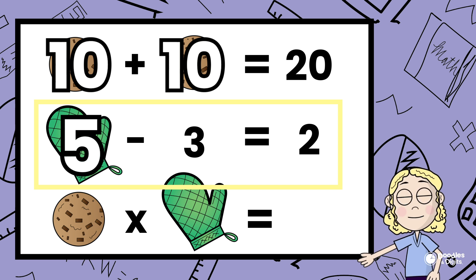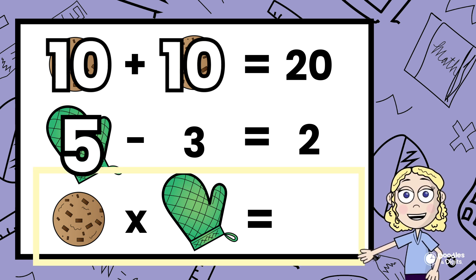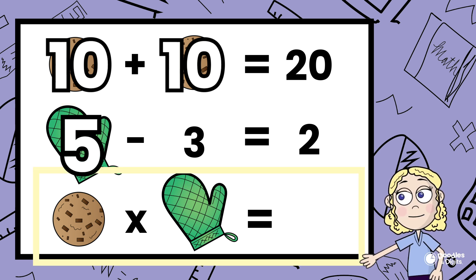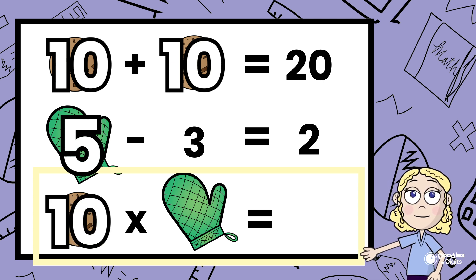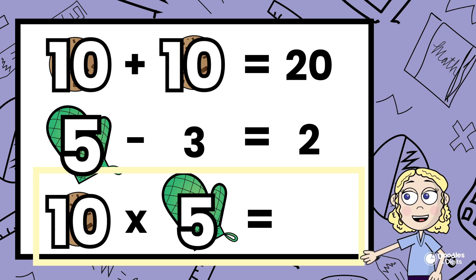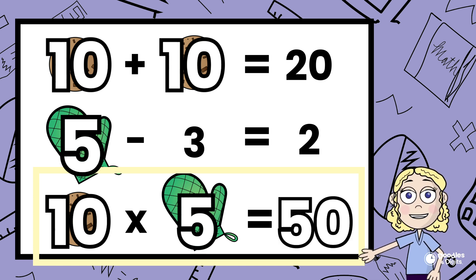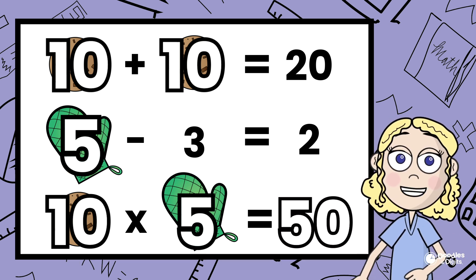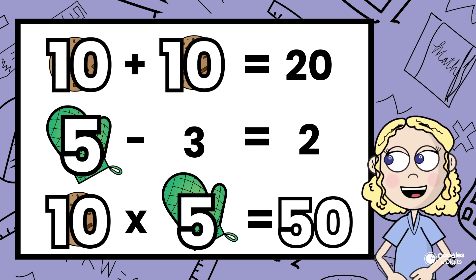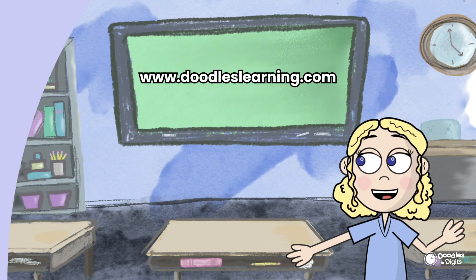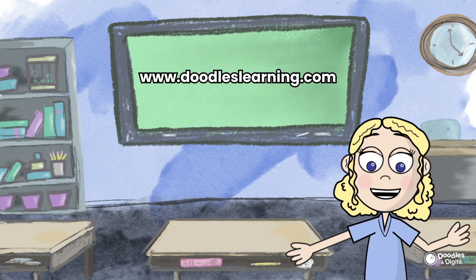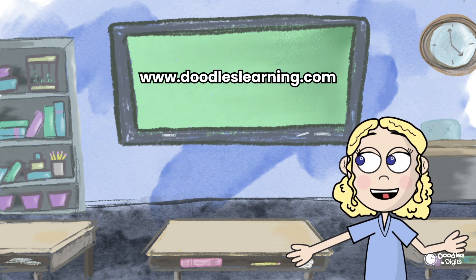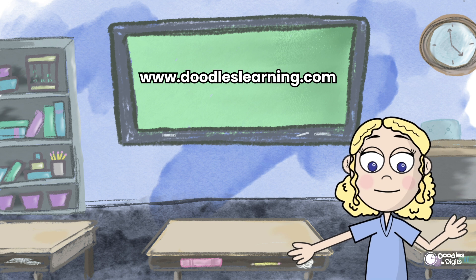All right, let's go on to this next problem. Cookie times oven mitt — so 10 times 5 equals 50. Your answer should have been 50. Did you get it correct? What strategies did you use? Did you try something different? Did you start in a different place? If you want more puzzles like this, make sure you like and follow — we'll put out new puzzles like this for you to try to solve. Bye!